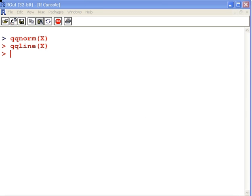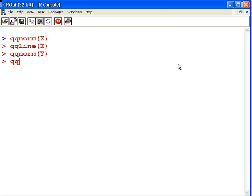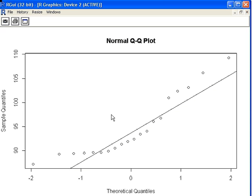I'm going to look at a counter example now. I have a second data set called Y. So I'm going to do the same thing again: qqnorm of Y and qqline Y and hit return. I'm going to look at our output again. It's down here in this window. I'll just bring that up. There we have it there.